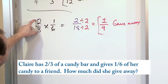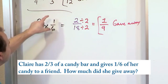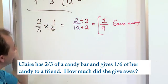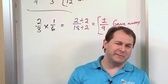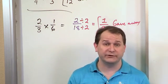It makes sense because she had 2/3 of a candy bar and gave away 1/6. So she gave away a pretty small amount. 1/9 of anything is fairly small. Chop something into nine pieces—one little piece is not very much candy.